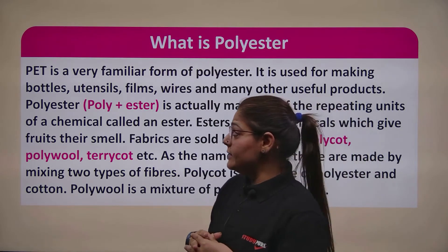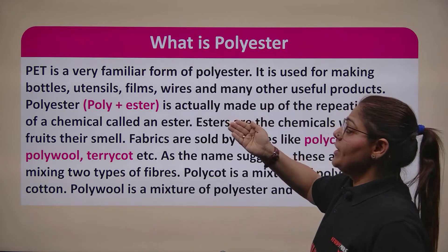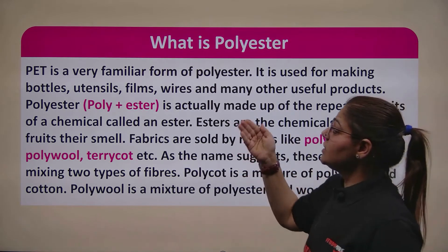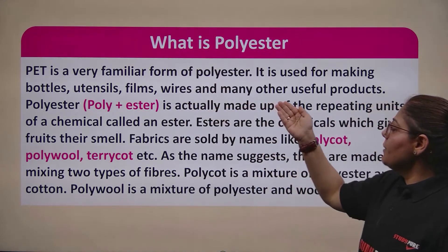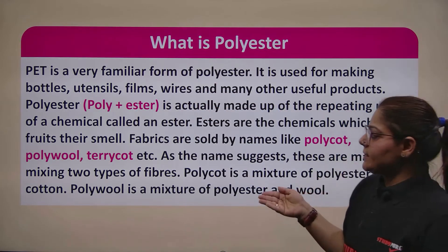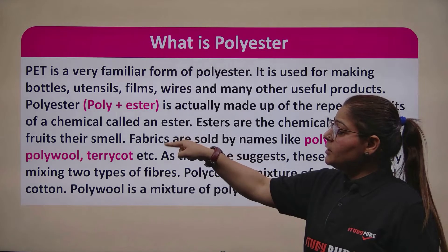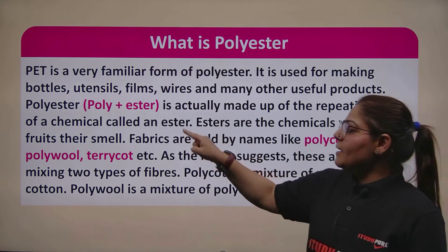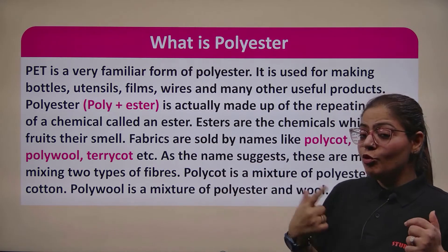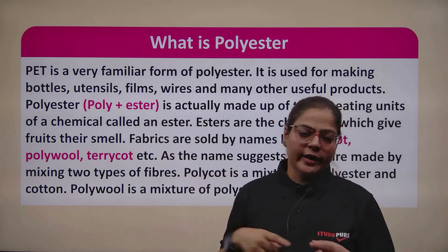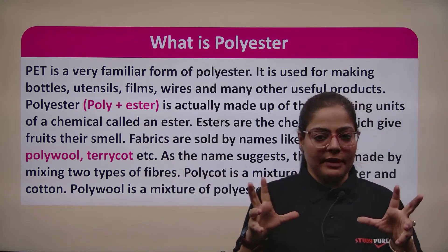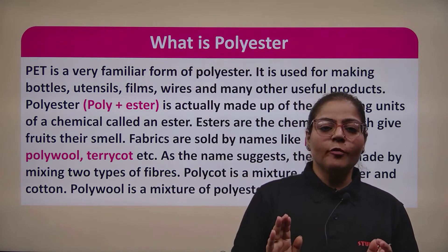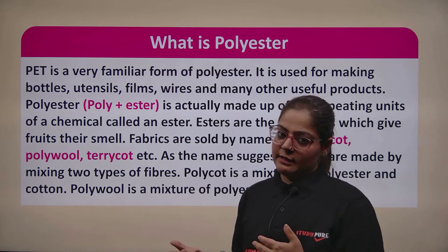Polyester means polymer plus ester — it is actually made up of repeating units of a chemical called an ester. That is the monomer logic — the monomer here is an ester, which is a form of chemical in chemistry. You can understand its structure, but since the depth part is for senior classes, we will study it there. Importantly, esters are chemicals which give a fruity smell.